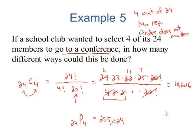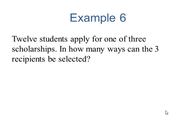Alright, last example, 12 students apply for one of three scholarships. In how many ways can the three recipients be selected? Three of 12, check.